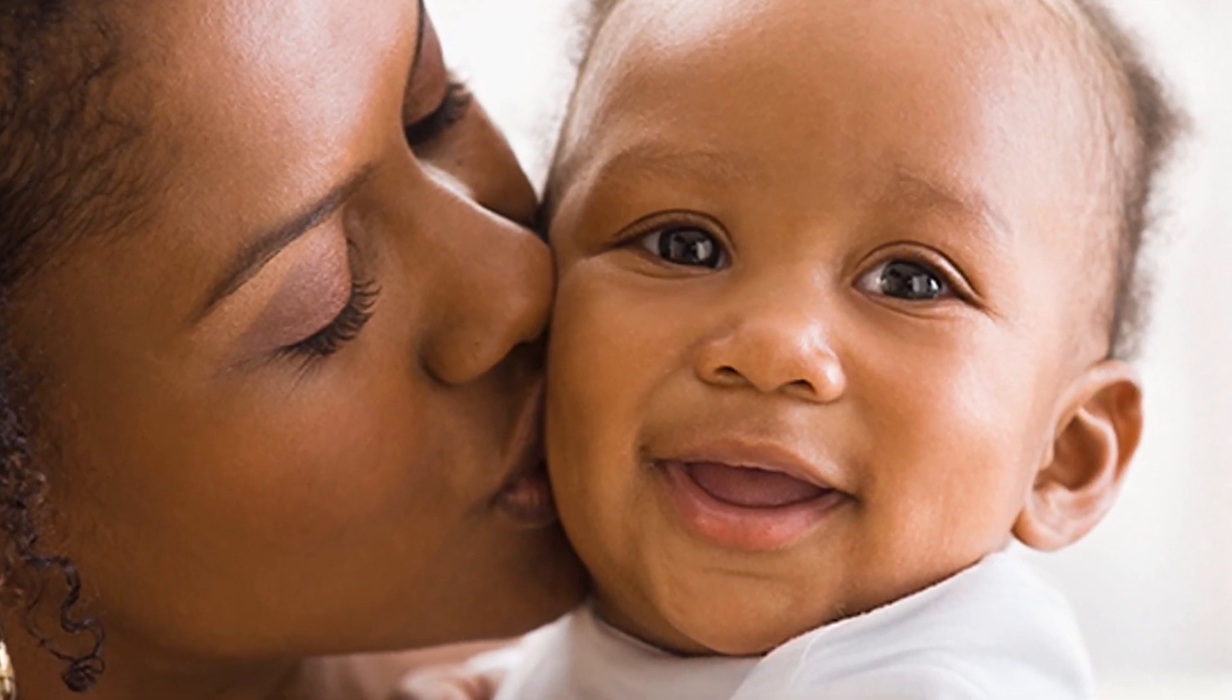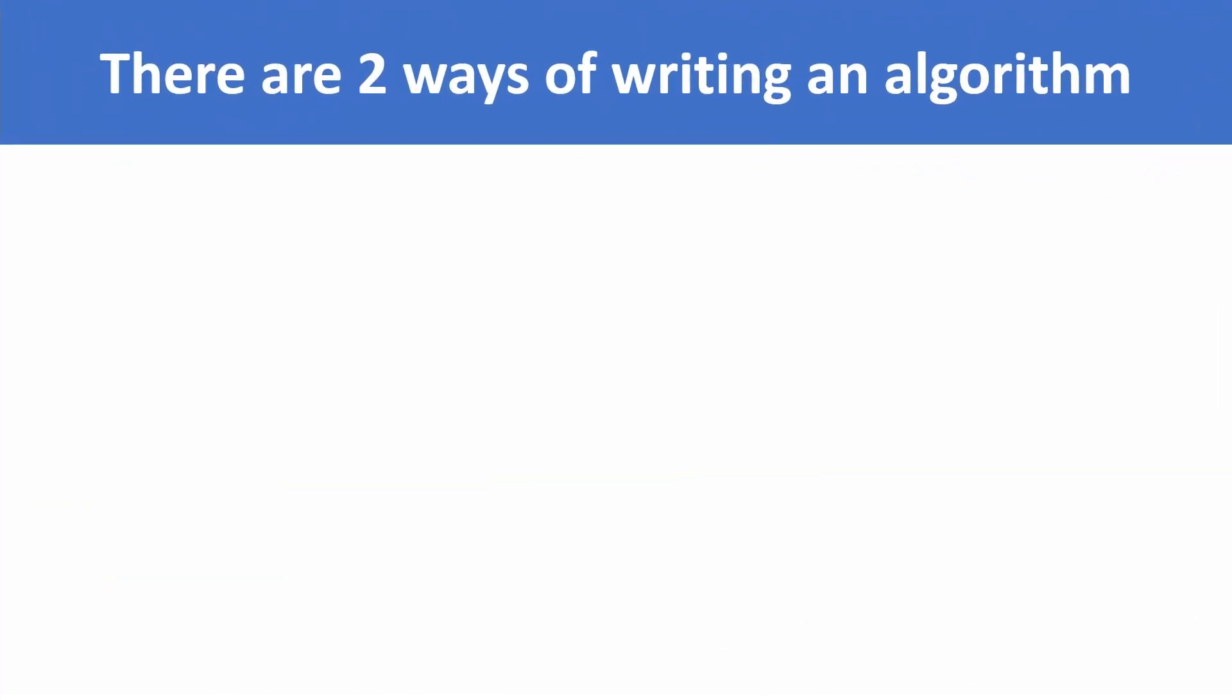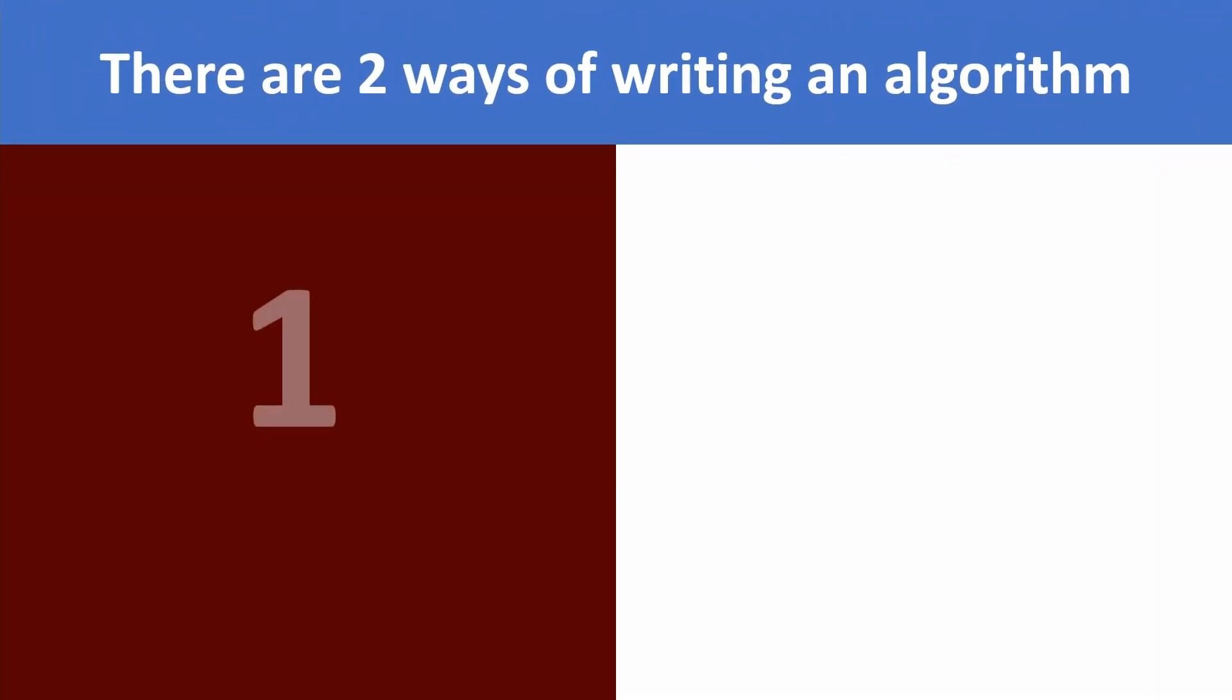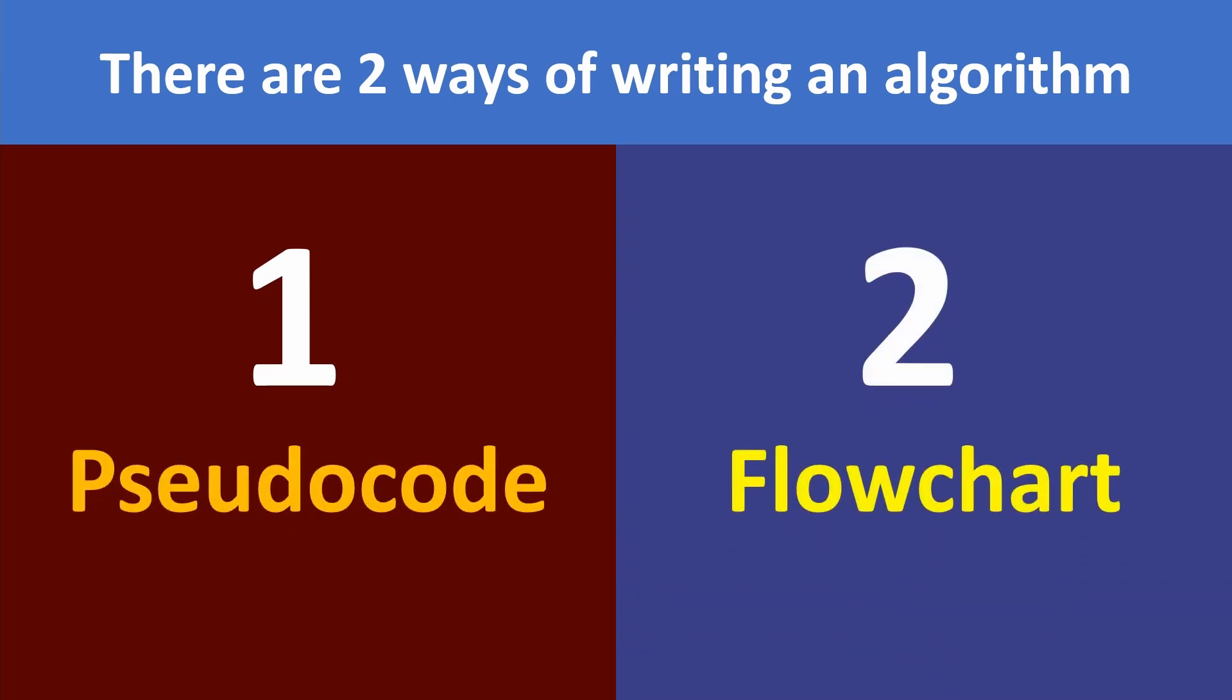So how can you write an algorithm? There are two ways of writing an algorithm: one, in pseudocode; two, using a flowchart. Pseudocode simply means writing in plain English, and flowchart means using a diagram.